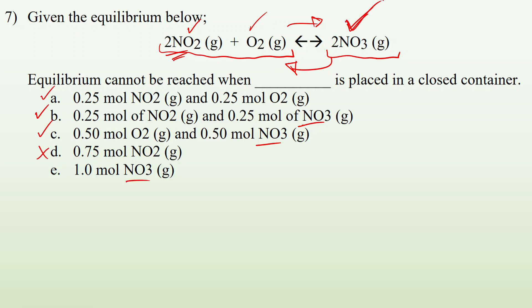Then one mole of NO3. Again, NO3 is my only product, so I have all of my product. I'd be able to create an equilibrium. So the question which cannot reach equilibrium, choice D.